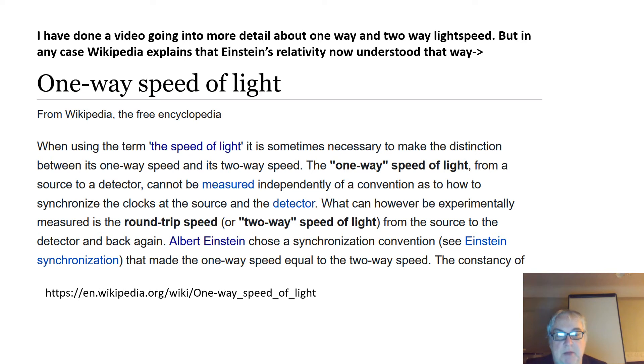'What can however be experimentally measured is the round-trip speed or two-way speed of light from the source to the detector and back again.' So basically, what it's talking about with two-way light speed is: you emit light, it goes a certain distance, it bounces back from say a mirror, and the time it comes back to the source you note.